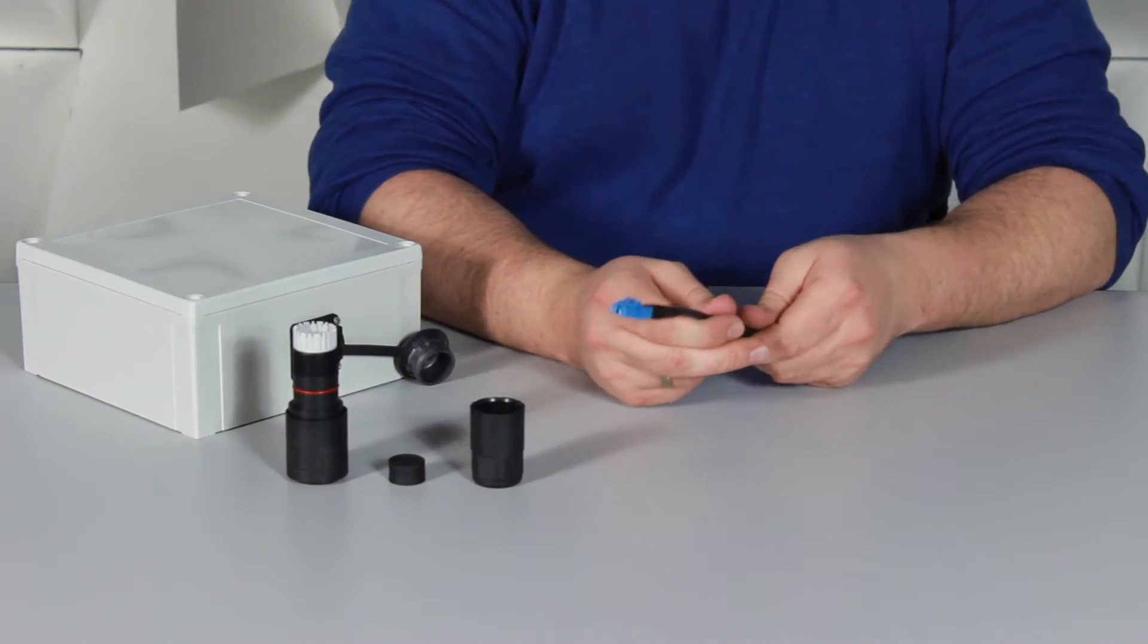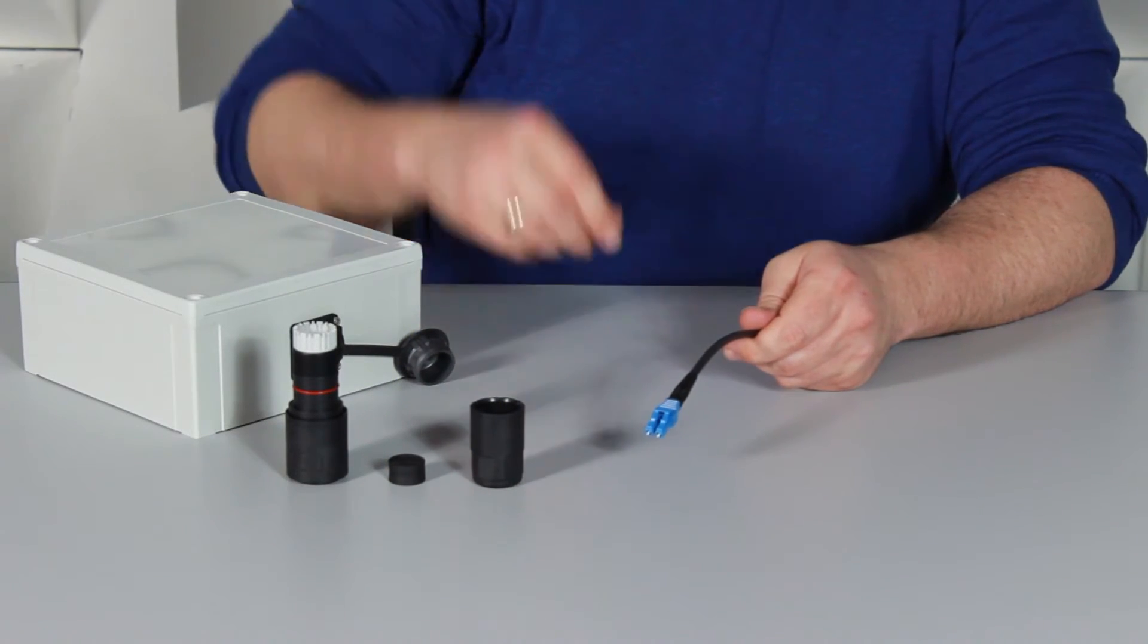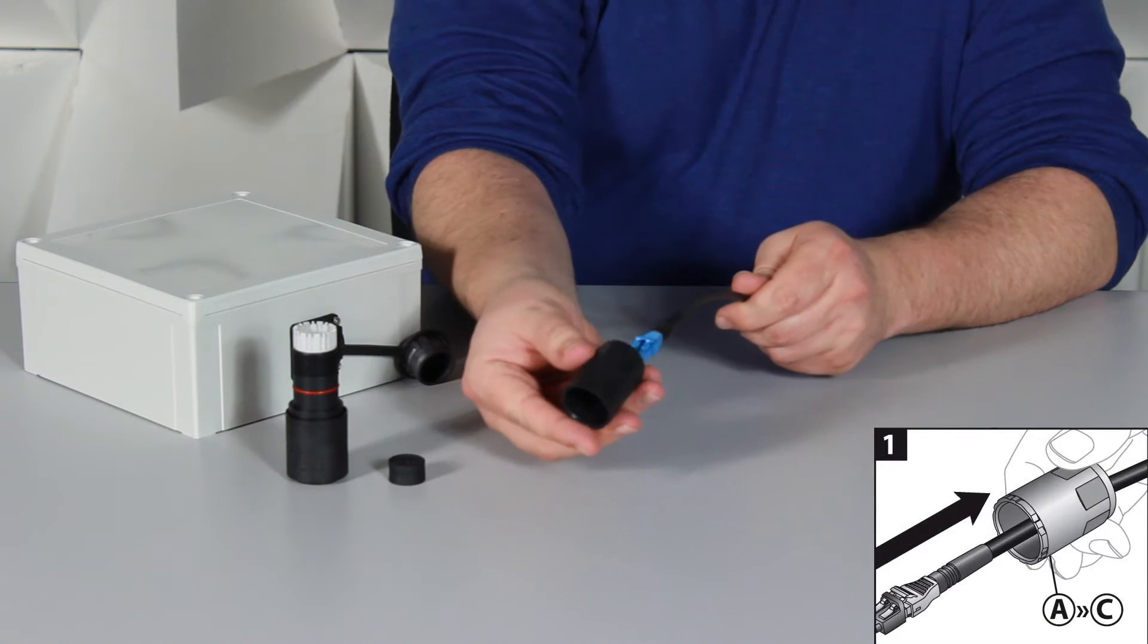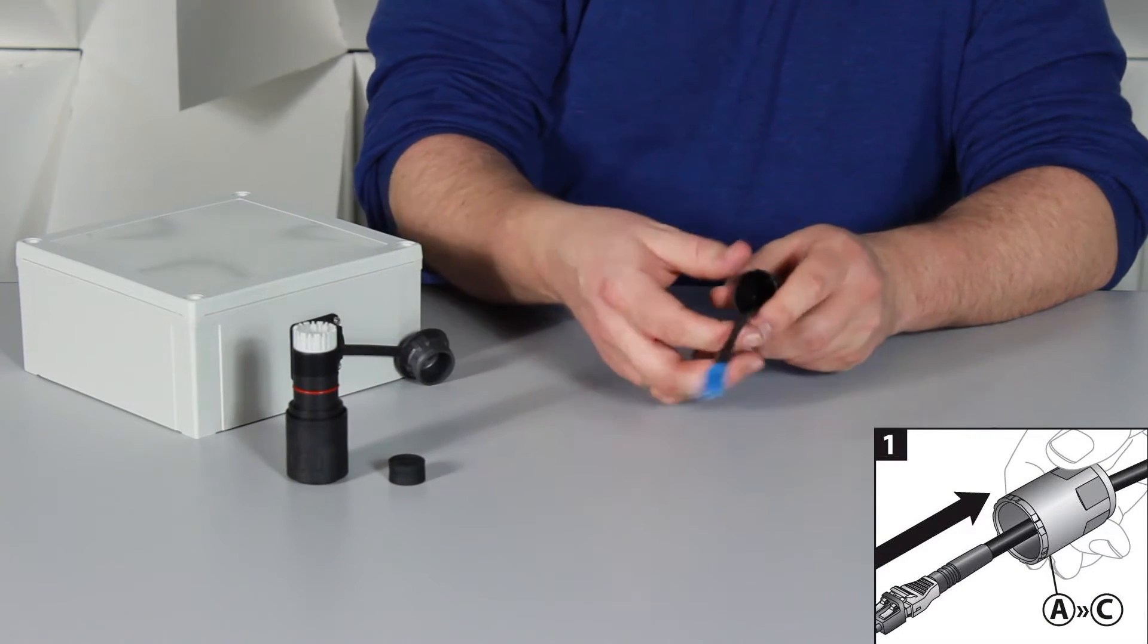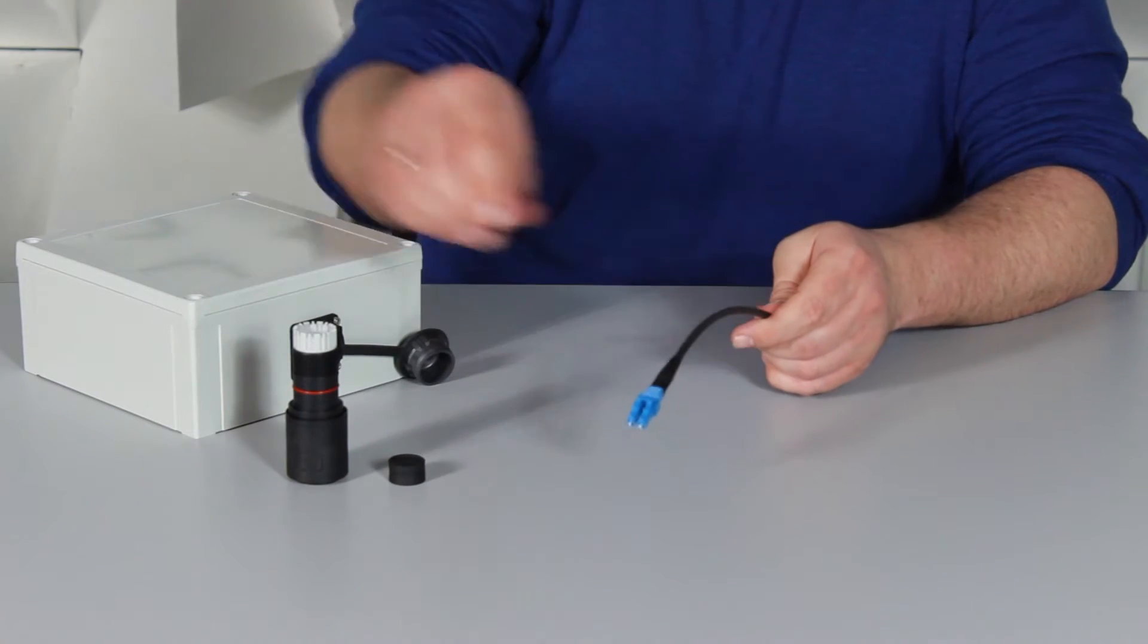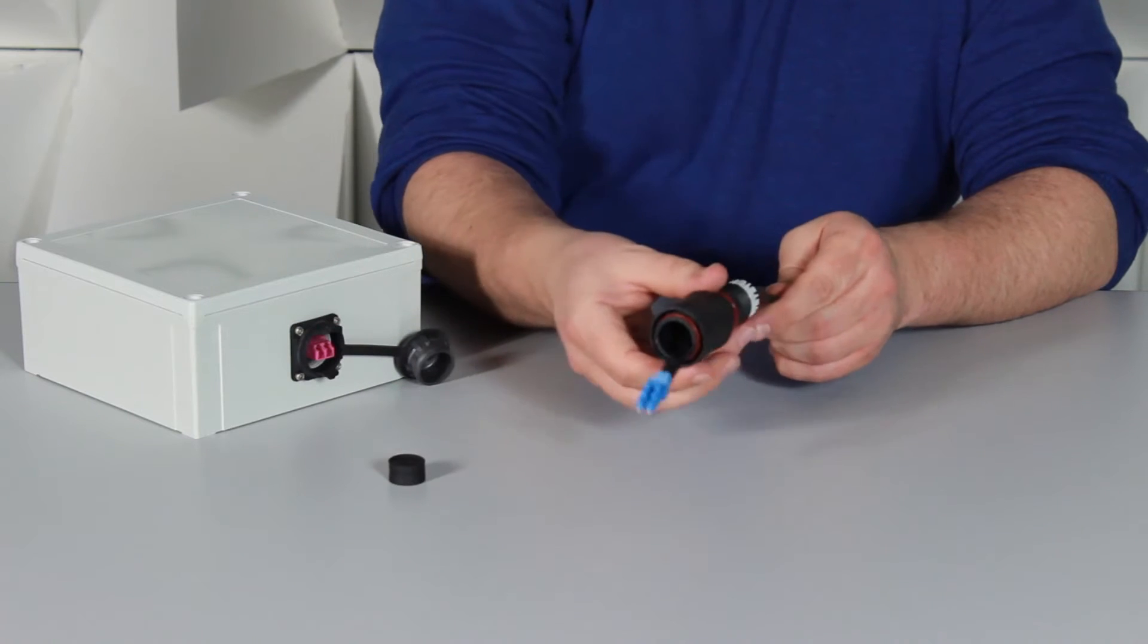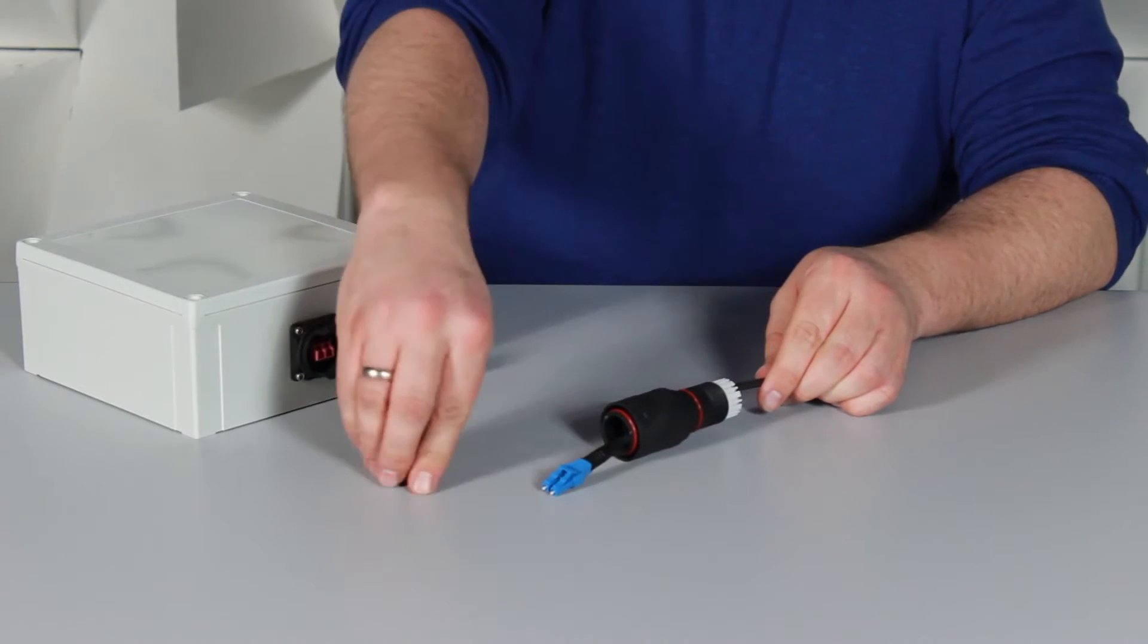We'll take a look at the steps necessary for assembling the fiber enclosure, starting with the cap nut. We place it over the connector onto the cable and then the fiber enclosure bulkhead.